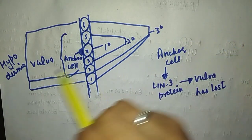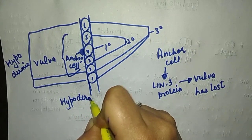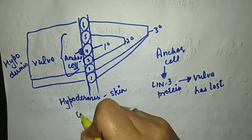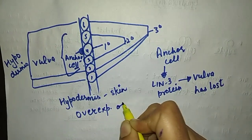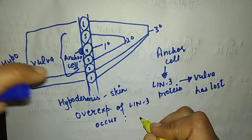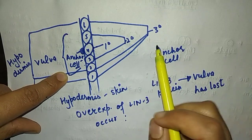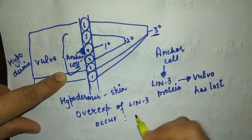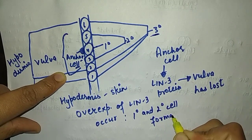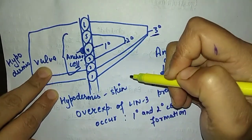So if the anchor cell gets mutated it leads to the formation of hypodermis. On the other hand, if overexpression of lin-3 protein occurs, there is no tertiary cell formation — only primary and secondary cells form. This means cells 3, 4, and 5 lead to the formation of primary cells, and the rest are known as secondary cells. This is how vulva formation occurs in C. elegans.